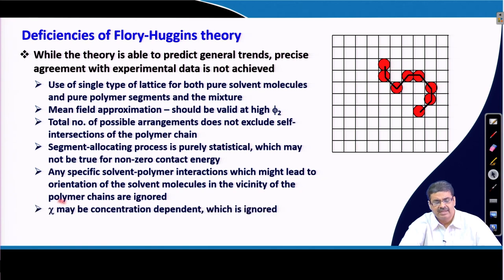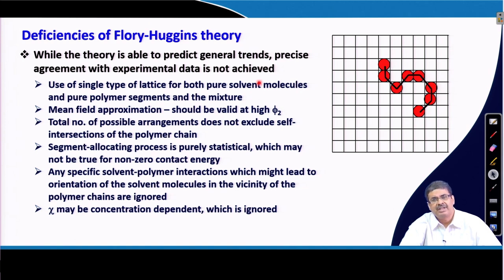It was also assumed that the polymer-solvent interaction parameter chi is not concentration dependent, which may not be true — it may also be concentration dependent. These are the assumptions made during derivation of Flory-Huggins theory that are not fully applicable, and that is the reason we do not get precise agreement with experimental data when we predict a thermodynamic property using Flory-Huggins theory.